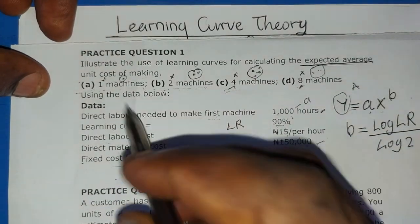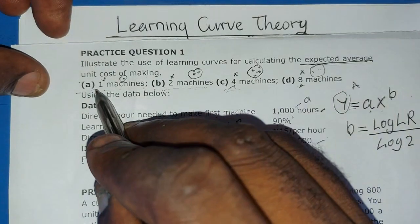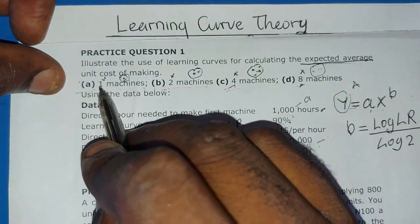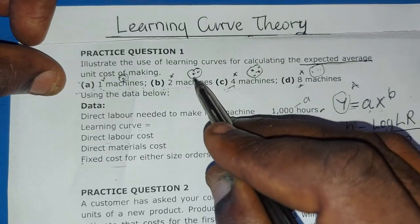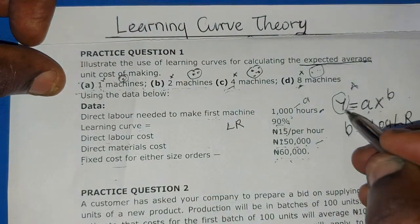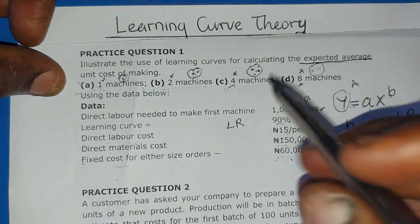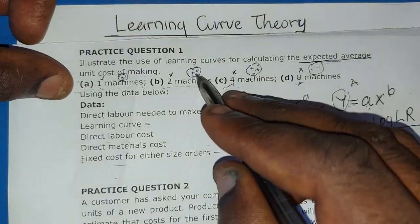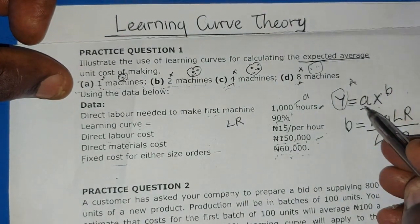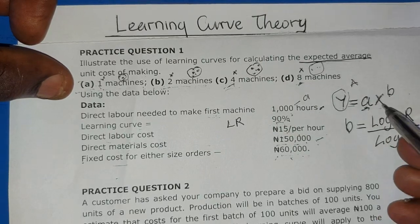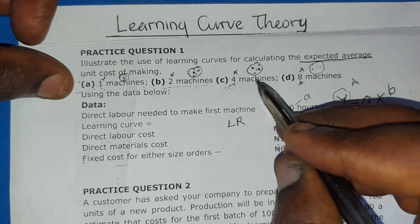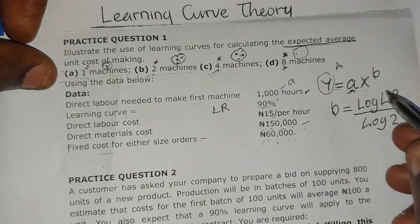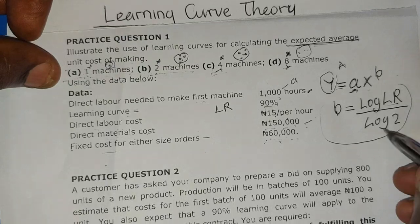From that, our Y will represent the time taken. For a cumulative of one, what is the time taken for producing one machine? For two machines, each of these machines has consumed Y time. The figures 1, 2, 4, 8 represent X. B is log of the learning rate divided by log 2.